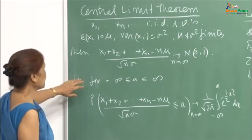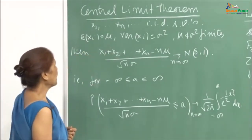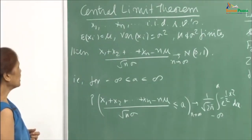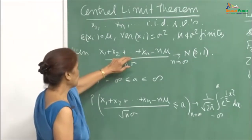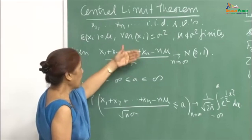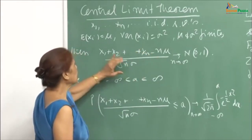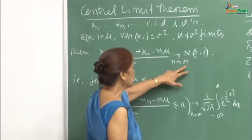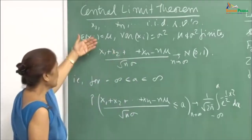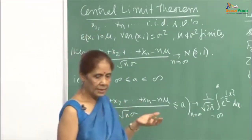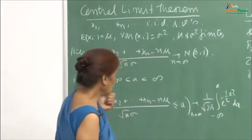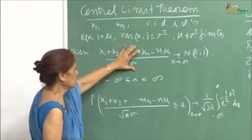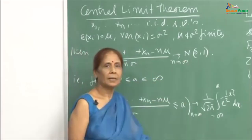The central limit theorem says that if you have a sequence of identically independently distributed random variables with mean and variance finite, then the sum x₁ + x₂ + ... + xₙ will have mean nμ and variance nσ². This will converge to N(0,1) as n goes to infinity.